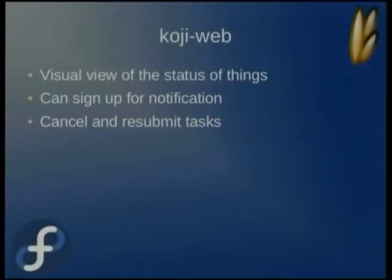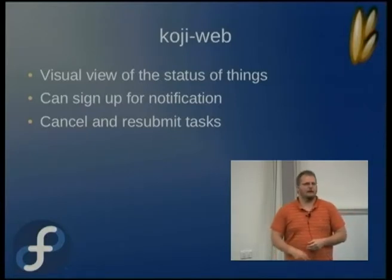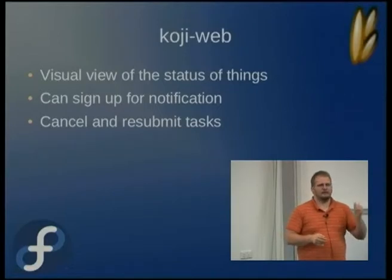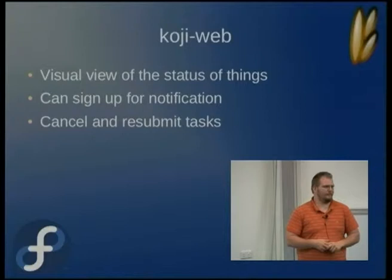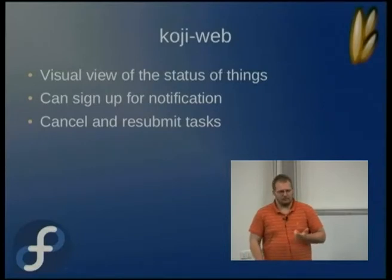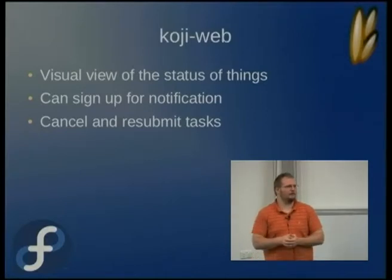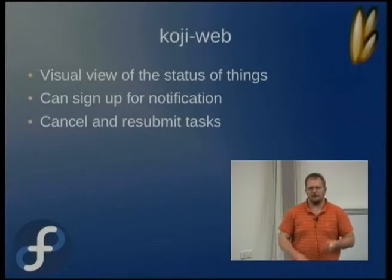Koji Web gives you a visual status of what's going on. You can look at Koji Web and see whether your build is running, or look up build logs — for example, if you did a build of GCC last week that failed, you can go back and grab the build logs. It gives you a method to sign up for notifications of builds, and it allows you to cancel and resubmit tasks.